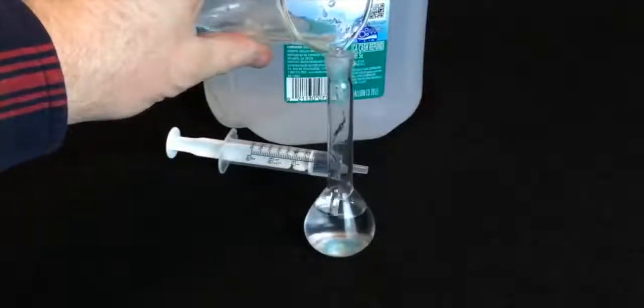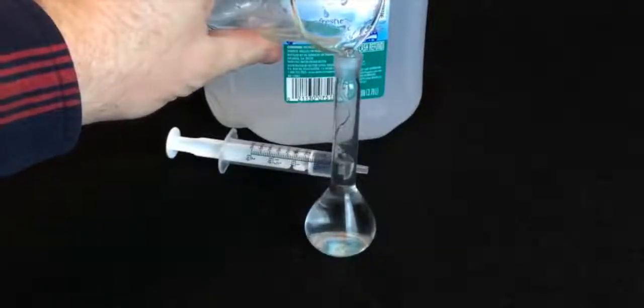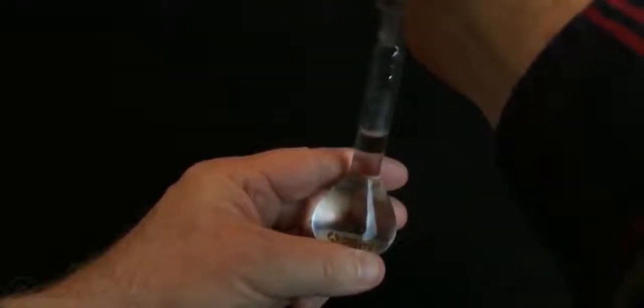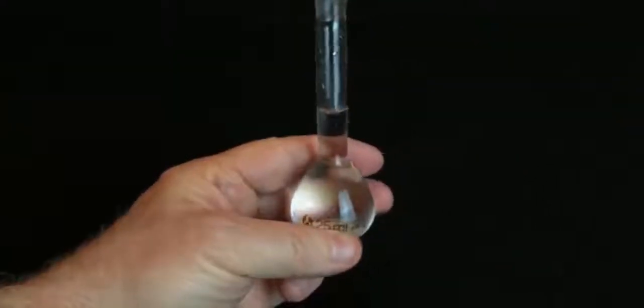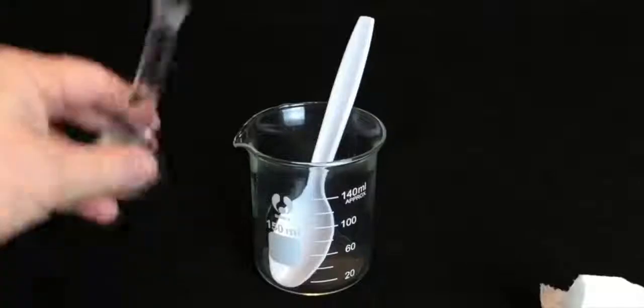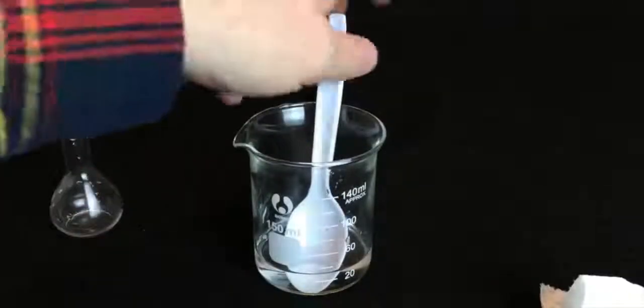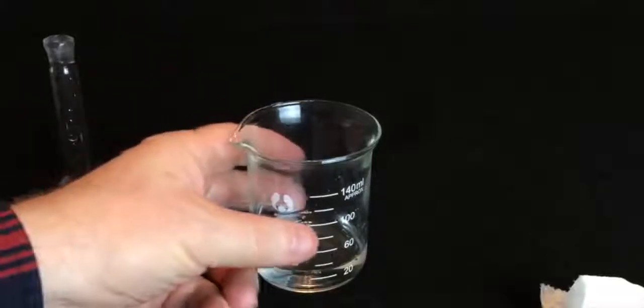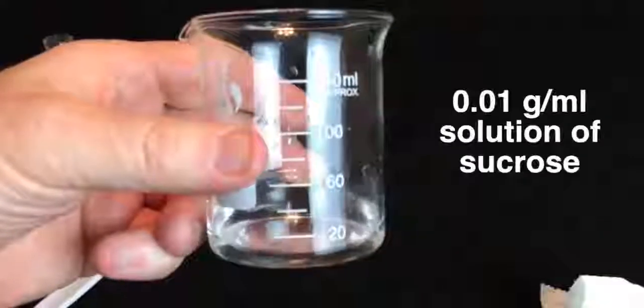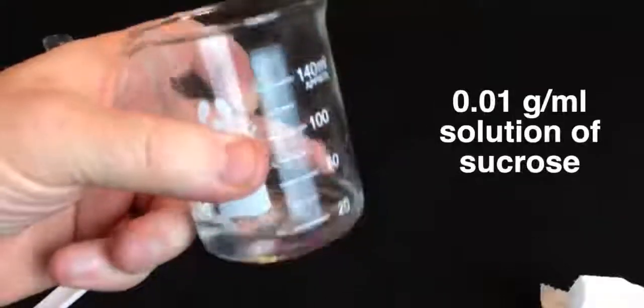Now to add the other nine parts, all you do is fill the flask with your solvent to the line. Note that you need to be very careful to approach the line slowly, one drop at a time, so as not to overshoot it, lest you dilute the solution too much. Next, just pour everything out into a beaker and mix it very thoroughly. And there you have it, your 0.01 grams per milliliter solution of sucrose.